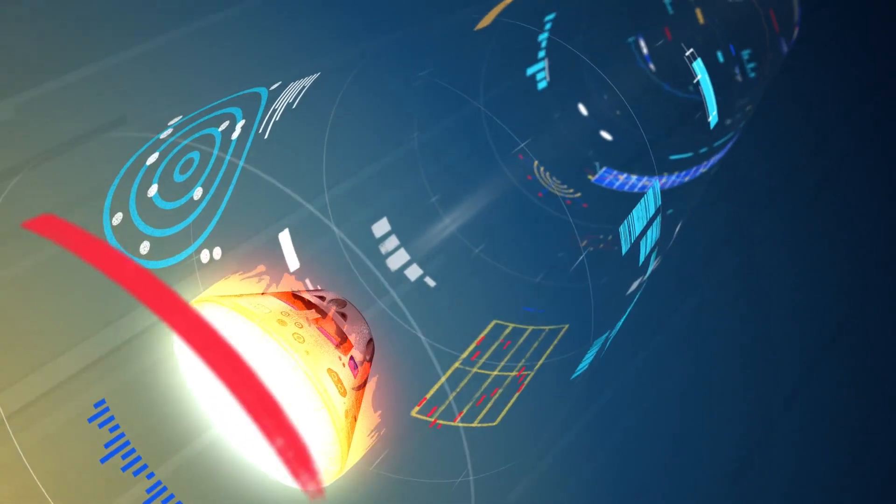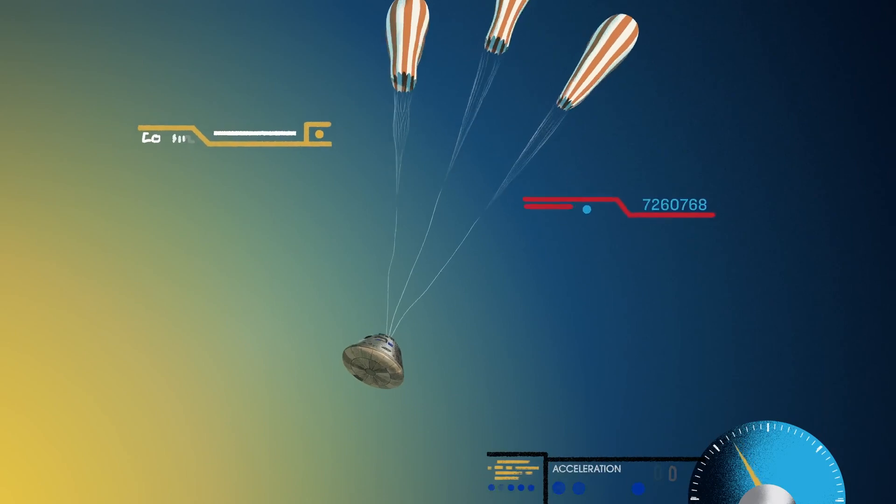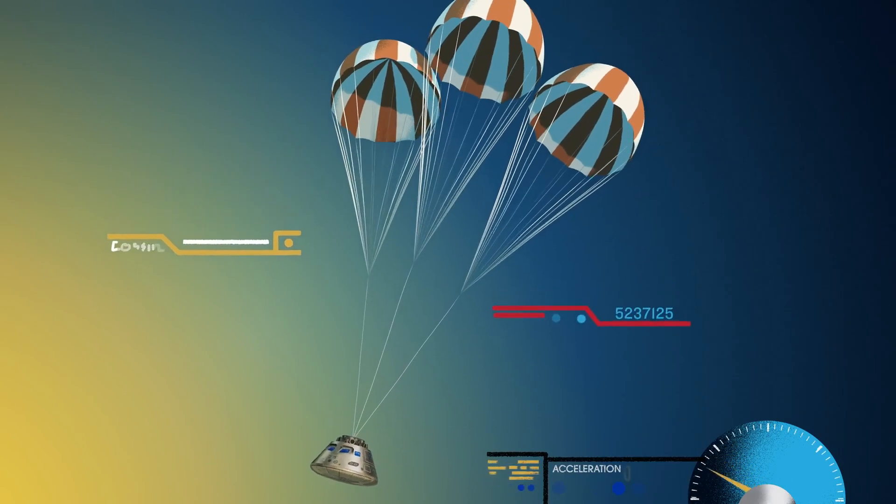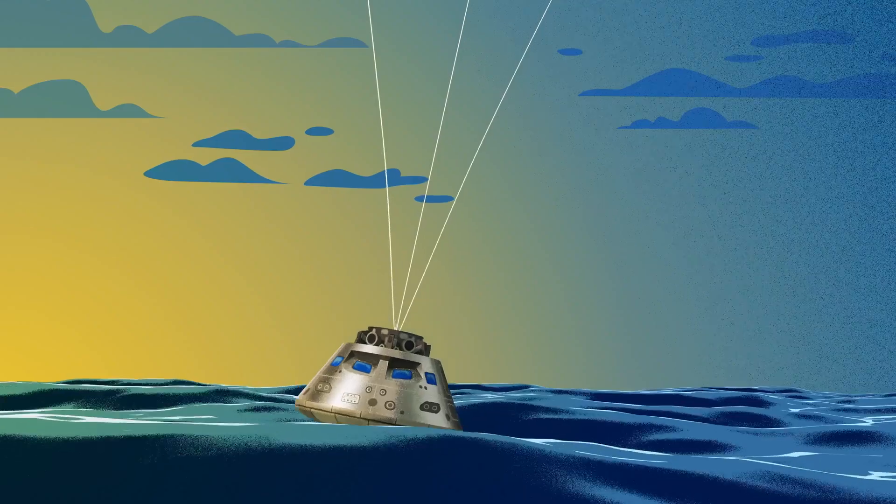With the Orion now at just 300 miles per hour, a series of parachutes uniquely tested and produced for this moment deploy, decelerating the craft to just 20 miles per hour for splashdown.